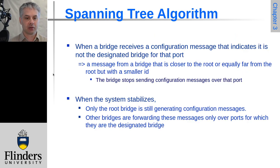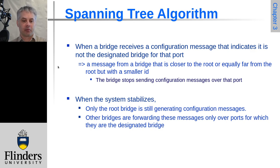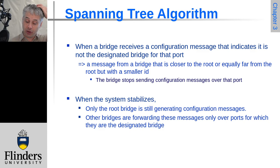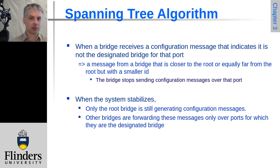If a bridge receives a configuration message that makes it realize it's not the designated bridge for a particular port, it will stop sending configuration messages over that port. Following all these rules through, we end up with only the root bridge generating configuration messages, and only the designated bridge for each interconnection forwarding those messages over other ports.